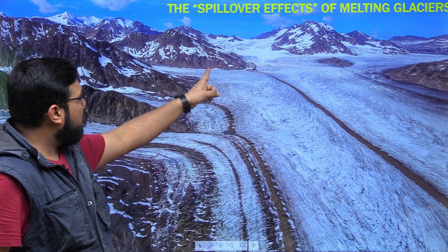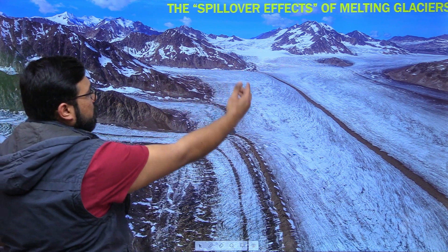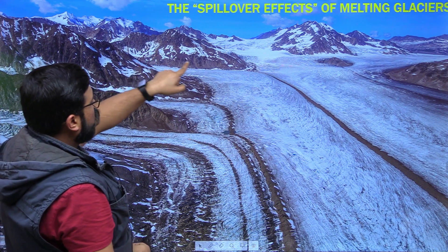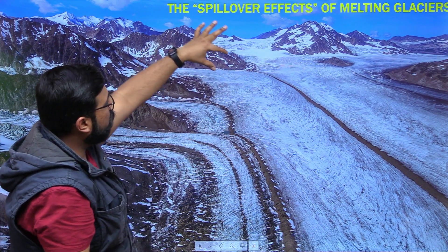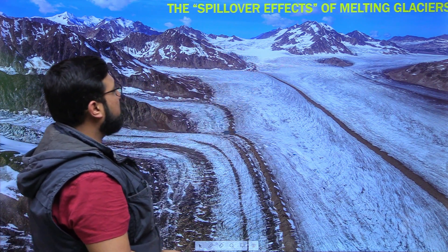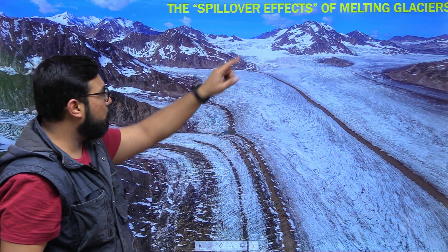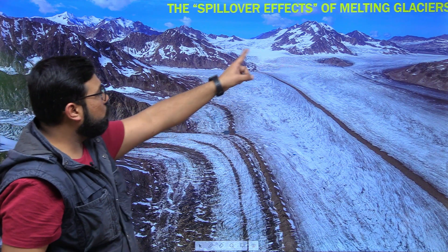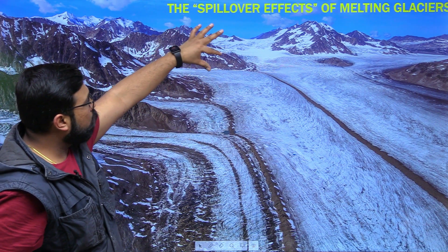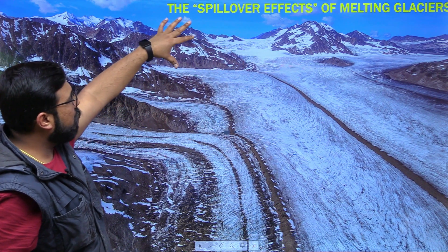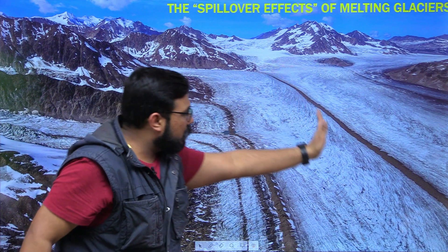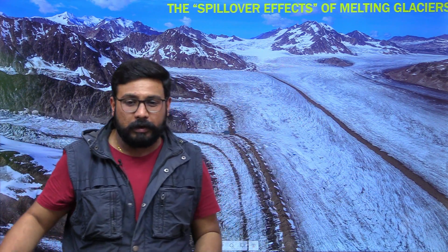When two glaciers move alongside a piece of mountain, they are constantly eroding it from the sides. The debris carried along the sides is known as lateral moraines. When these two glaciers finally join, the two lateral moraines merge and the debris is now carried in a central line known as the medial moraine.